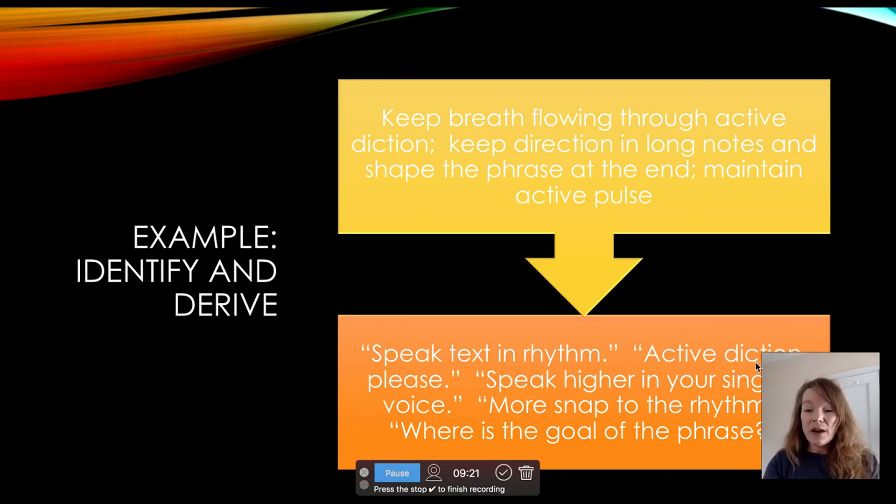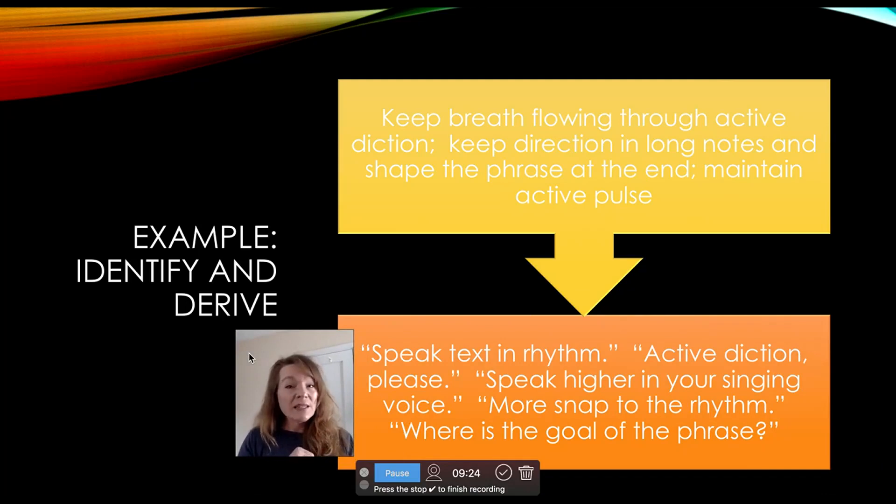So then my three to five word directives might be speak text in rhythm. And hopefully they're reminding themselves speak rhythmically accurate, speak in my singing voice, speak with dynamic and articulation. Another one would be active diction, please, reminding them of the rhythmic accuracy of their speaking. Speak higher in your singing voice, or simply speak in your singing voice. I might say more snap to the rhythm, or asking them where is the goal of the phrase? So we don't discuss it. I ask them and we go and they answer me with their actual music making.